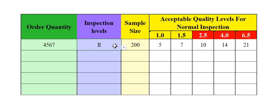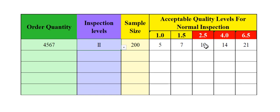You just select the inspection level from the drop list. And look — here automatically comes the sample size across one, two, three, four, five levels. Whichever one you are following — major or minor — you will follow the AQL level.